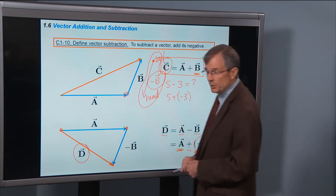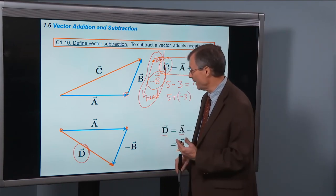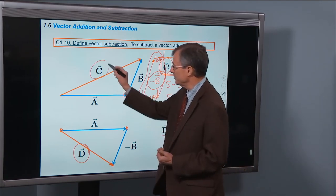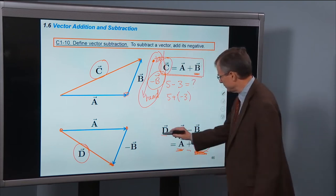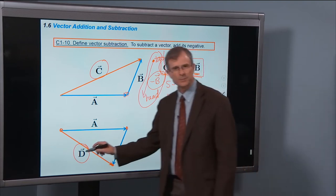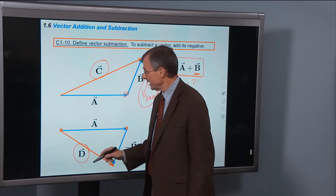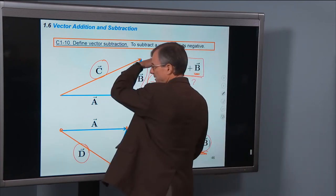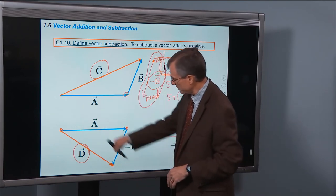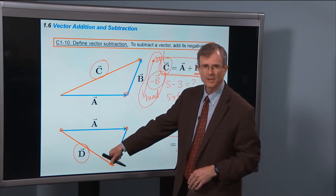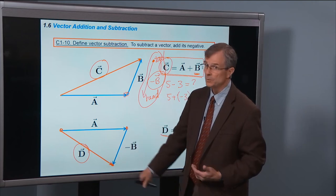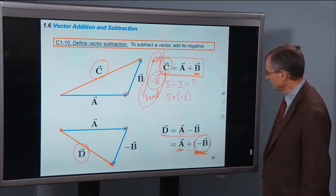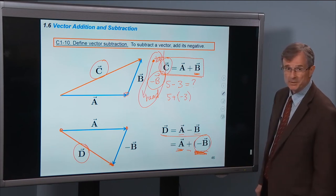Comparing the sum a plus b — that gives me c — and the difference of these two vectors, which gives me d: do they look the same? I hope not. Certainly c is in a different direction from d, and the magnitude of d is going to be less than c as well. That's how you subtract vectors.